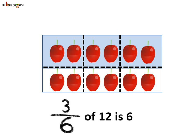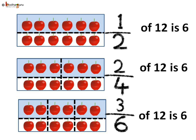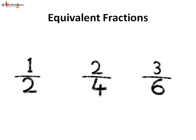Similarly, if we make six parts of twelve cherries, then each part has two cherries. And if we take three parts — that is, three parts out of the six parts — then again it is the same, which is six cherries, as three times two equals six. Whether it is one by two, two by four, or three by six, all are equal and represent the same amount — six cherries out of twelve cherries. So now you clearly understand why one by two, two by four, and three by six are called equivalent fractions, as they all represent the same value.